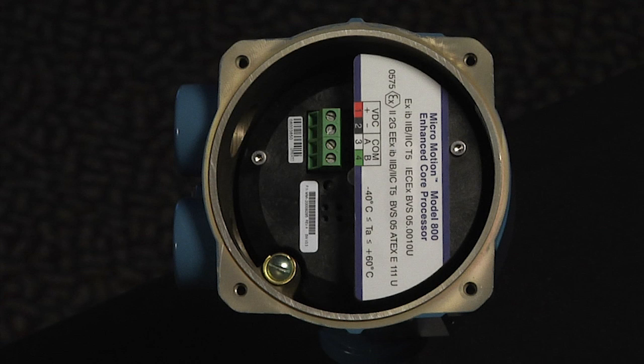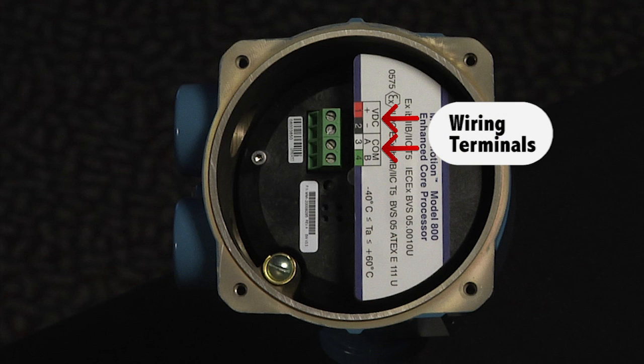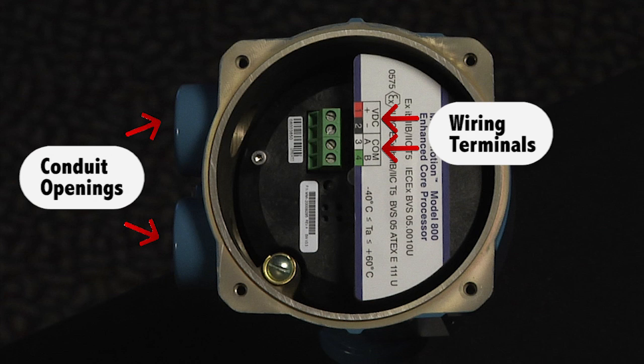For the purpose of this video, we're going to assume the transmitter housing cover is off so that you have access to the wiring terminals that you're working with. Micromotion devices have different sized conduit openings, so it's important to match the right cable gland to the right conduit opening.